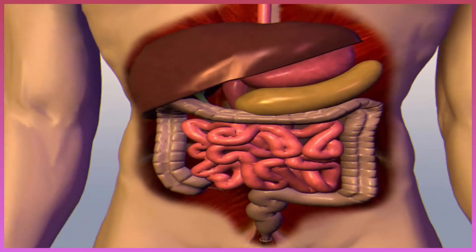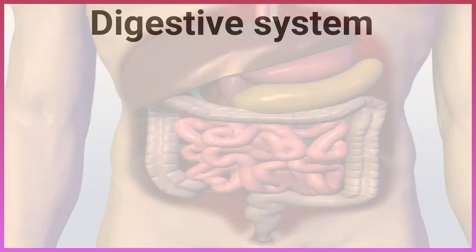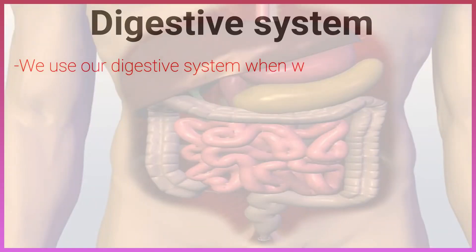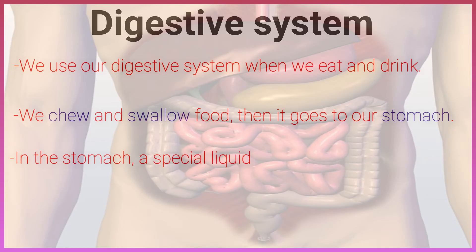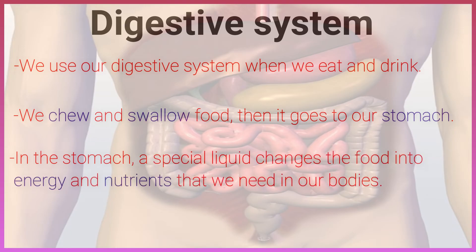Digestive system: we use our digestive system when we eat and drink. We chew and swallow food, then it goes to our stomach. In the stomach, a special liquid changes the food into energy and nutrients that we need in our bodies.